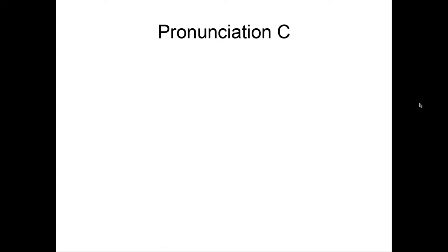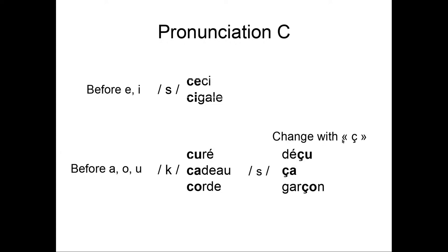How is the C pronounced? When it's before E or I, it's pronounced S, like in ceci, cela. But when it's before A, O, or U, it's pronounced K, like in cure, cadeau, and corde. If we don't want to have this, to pronounce like this, we can change it with cedilla. So, if you see a C with a cedilla, it's always pronounced S. So, we have dessus, ça, garçon. And of course, when it's at the end, it's mute.